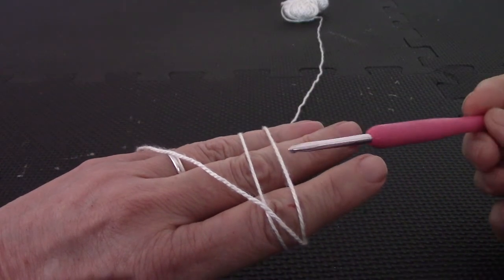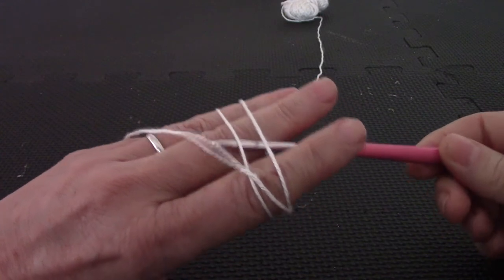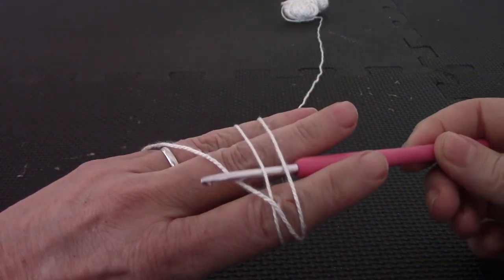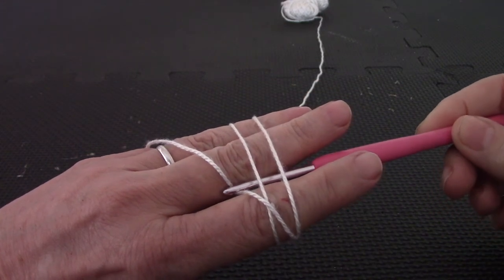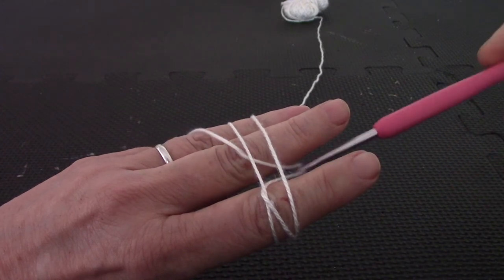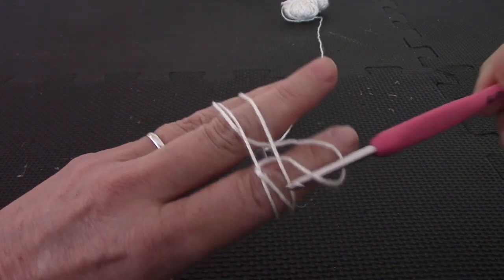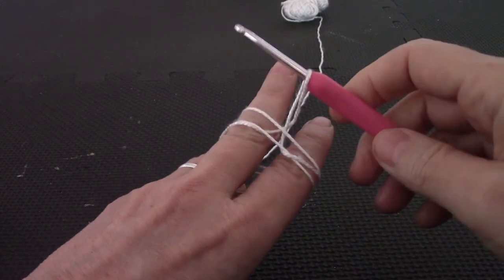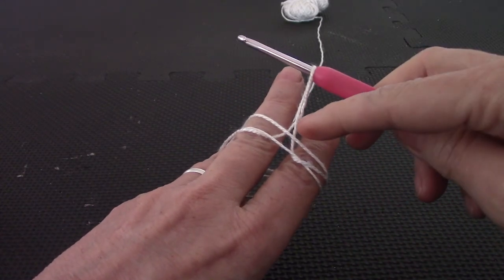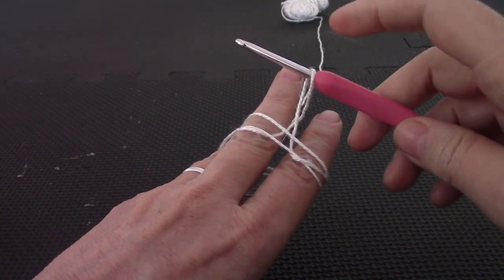Now you insert your hook underneath these two strands on the fingers and you drag out that one that you threw towards the wrist. Drag it out and you turn as if to crochet. Now it looks like that. Can you see there's a little twist there? That's what you want.